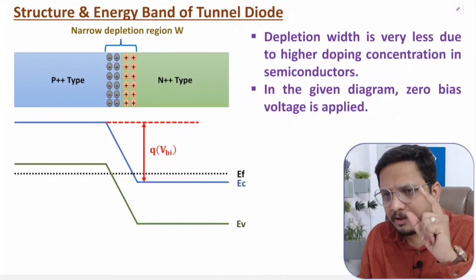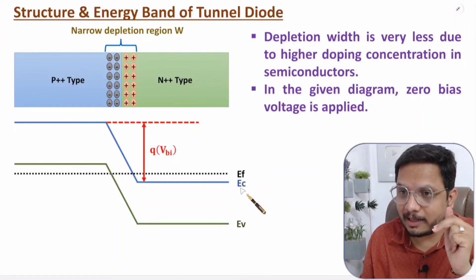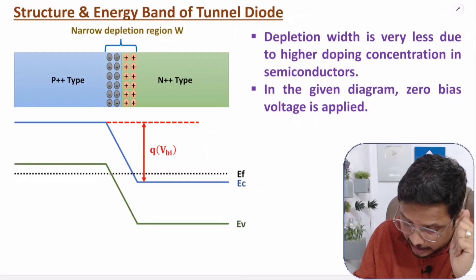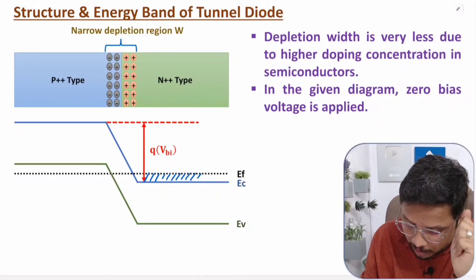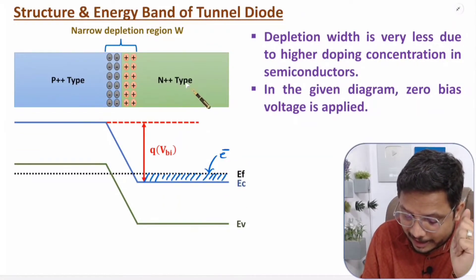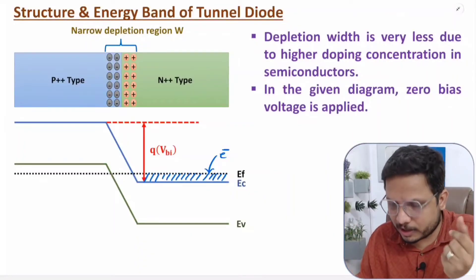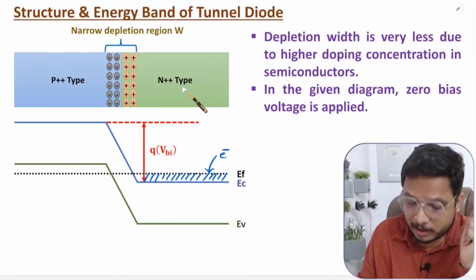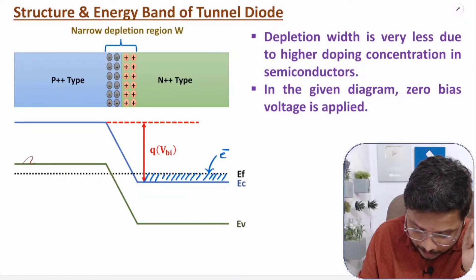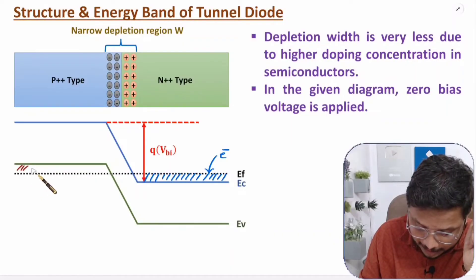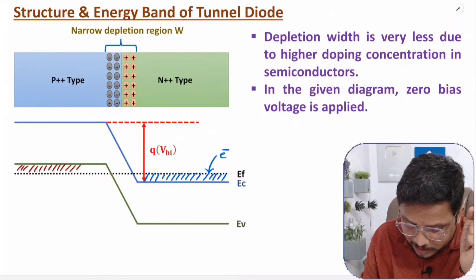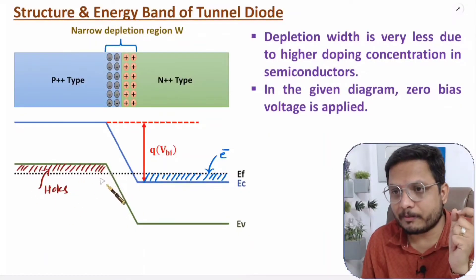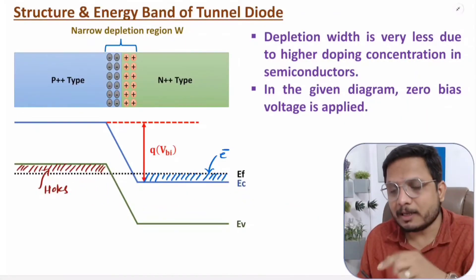Looking at the energy band diagram, Ec is the conduction band energy and Ef is the Fermi energy level. At the n-type side, in the vicinity between Ec and Ef, we have excessive electrons as free charge carriers due to the high doping concentration. At the p-type side, in between Ev and Ef, we have excessive holes as free charge carriers. Based on these holes and electrons, there will be a tunneling effect.